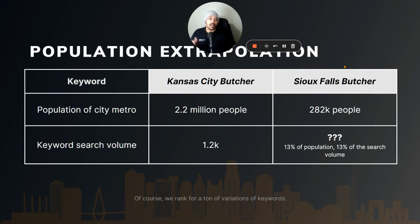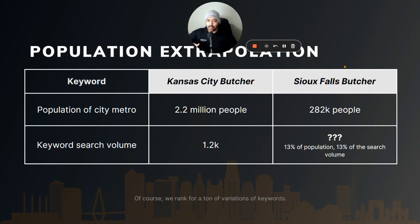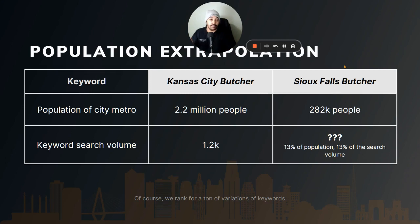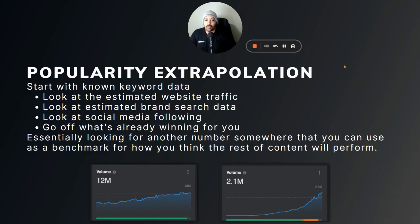So maybe around 130 to 140 searches per month. And of course when you create a page you're not ranking for just one keyword — you'll rank for all kinds of variations: 'butchers in Sioux Falls,' 'cheap butcher,' or people who just search 'butcher' while in the Sioux Falls metro. Your page should show up locally. That's what I mean by population extrapolation.